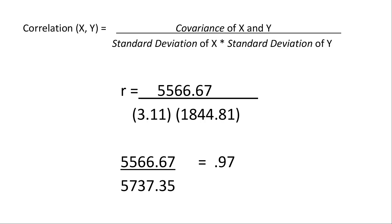The formula for correlation: you take the covariance of x and y and divide it by the standard deviation of x multiplied by the standard deviation of y. If the standard deviation of number of ads was 3.11 and the standard deviation of sales was 1,844, then I can figure out my correlation. Doing that math, my correlation was 0.97. We max out at plus one and bottom out at minus one, so a 0.97 says they're moving in the same direction and almost perfectly together — when one moves, the other moves as well.